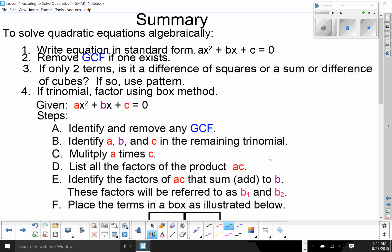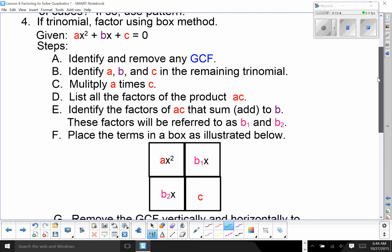In summary, to solve a quadratic equation algebraically, you write it in the form ax squared plus bx plus c equals 0. The equals 0 is important. Got to get it to 0. Remove the greatest common factor. If there's only two terms, you're looking at a difference of squares or a sum or difference of cubes. If so, use the appropriate pattern. Instead, if it's three terms, you've got a trinomial. You need to follow the method to solve it either using the box or by grouping.